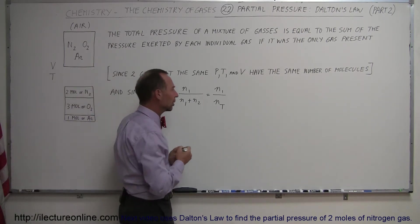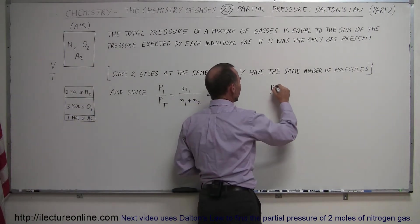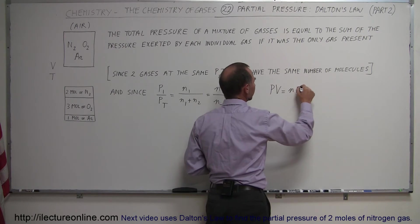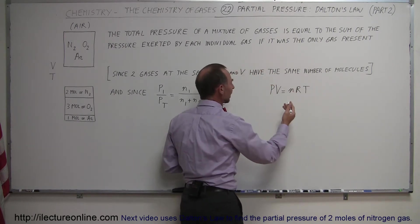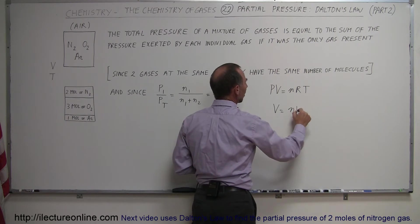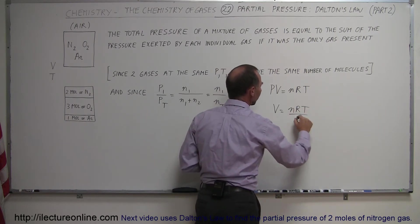So if we then take the equation PV equals nRT, and then we rewrite it where we can say that the pressure is equal to nRT over V.